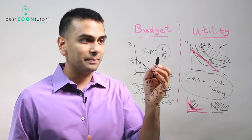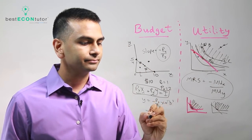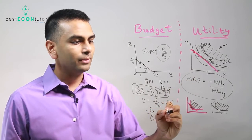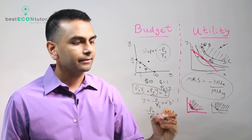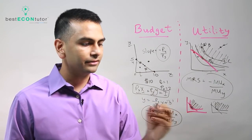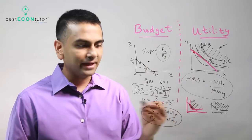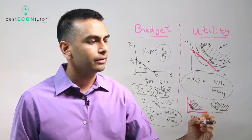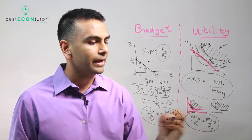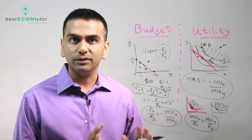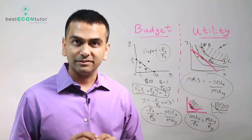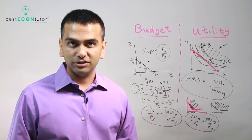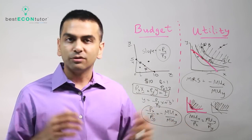Tangent means the two curves have the same slope at that point. The slope of the budget line is negative Px over Py, and we want that to equal the slope of the indifference curve, which is negative MUx over MUy. Cross-multiplying and canceling the negatives gives: MUx over Px equals MUy over Py. This is called the rational spending rule — it means the extra happiness per dollar is equal for both goods, and if this equation holds, you're maximizing your utility.